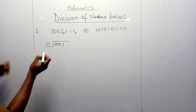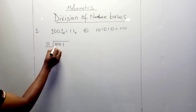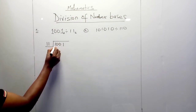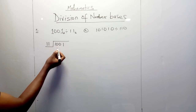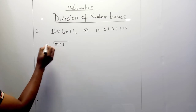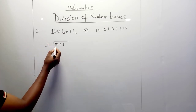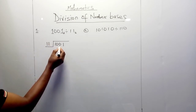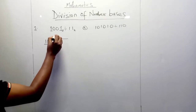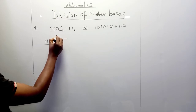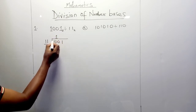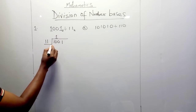How do we divide? We look at the first two-digit number inside, which is 10. Obviously, 10 is less than 11. So we take the first three-digit number, which is 100. Since 100 is bigger than 11, we're going to write 1.